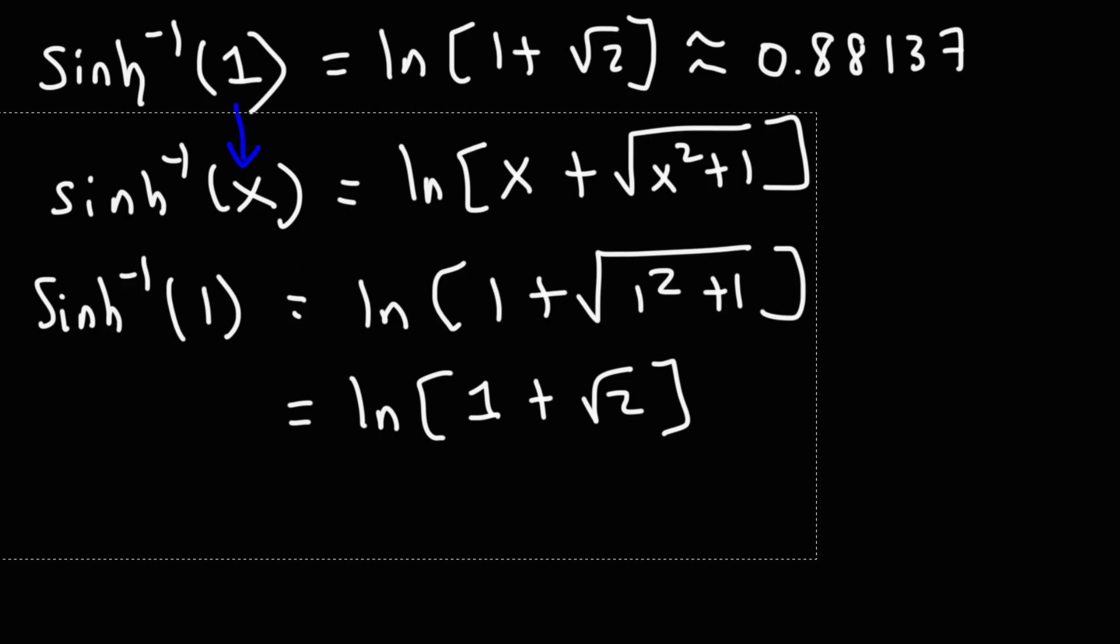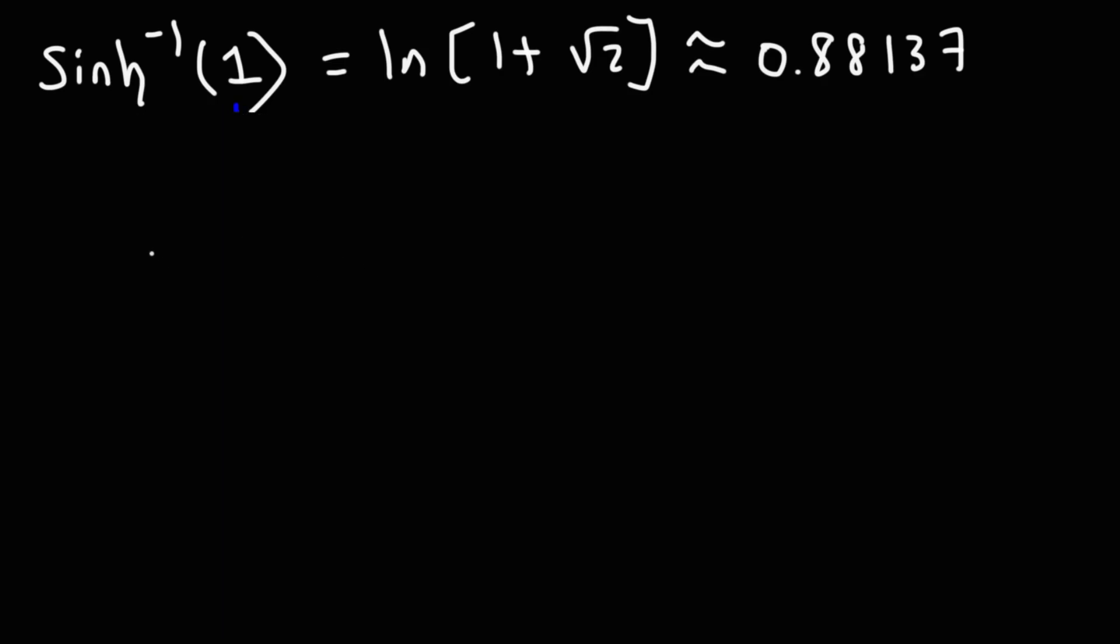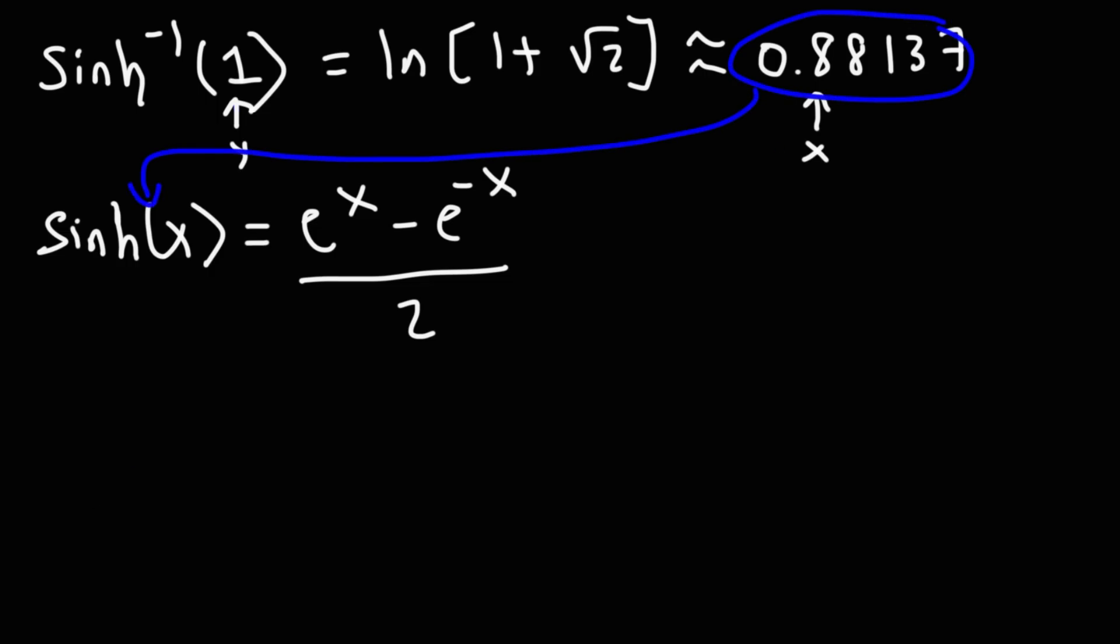And we can confirm this using the exponential function of hyperbolic sine. So we know hyperbolic sine is e to the x minus e to the negative x over 2. This is the y value. This is the x value. So if we were to take this value, plug it into x for this equation, we should get y. And that's how we can confirm if we have the right answer.